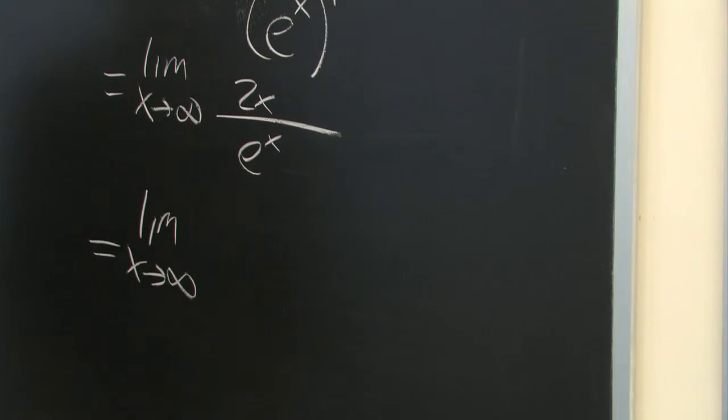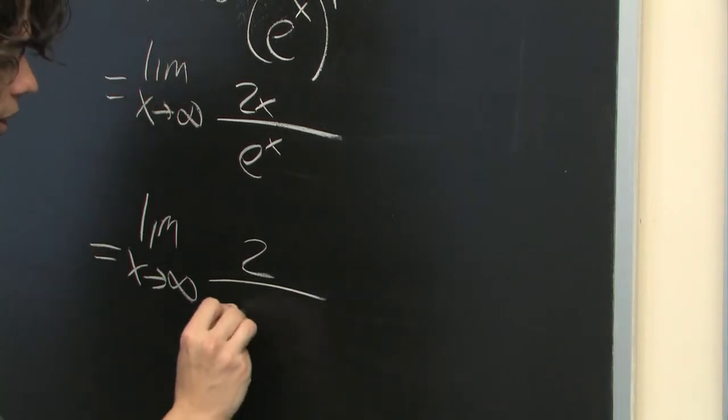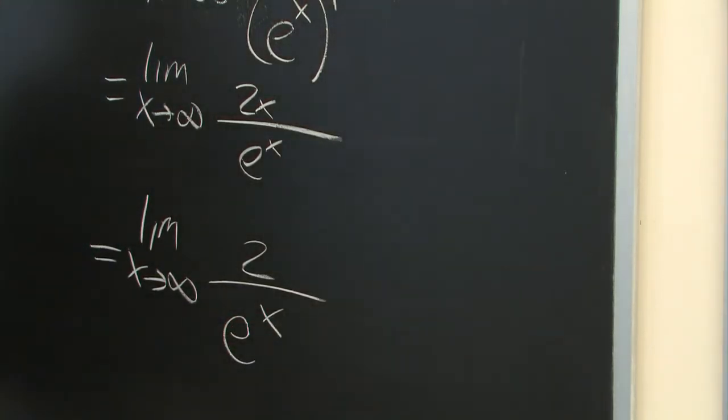Limit as x goes to positive infinity, derivative of the numerator is simply 2, and the derivative of the denominator is e to the x again.